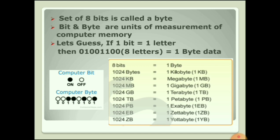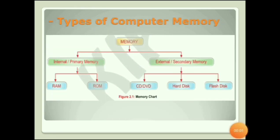The next measurements are petabyte (PB), exabyte (EB), zettabyte (ZB), and yottabyte (YB). Now you can easily understand the concept of memory and the measurements of data in computer memory. Let's move forward to the types of computer memory.